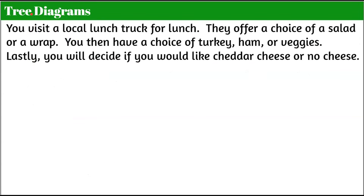Let's begin by talking about a tree diagram. Here's a real world situation. We visit a local lunch truck for lunch. They offer a choice of a salad or a wrap. You then have a choice of turkey, ham, or veggies. And lastly, you will decide if you would like cheddar cheese or no cheese. So we're going to create a sample space — specifically a tree diagram — to determine how many possible outcomes there are. How many different choices can you make?